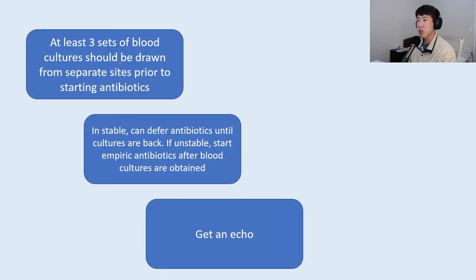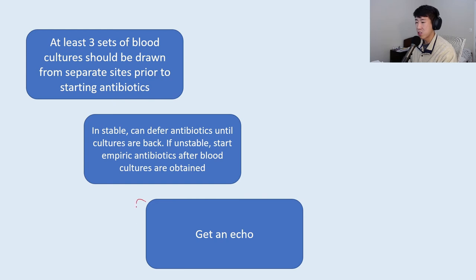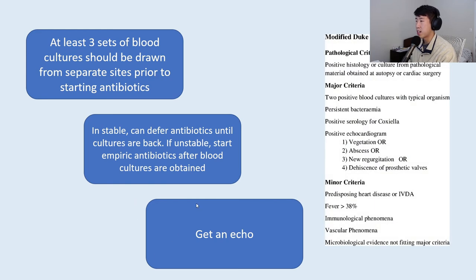For treatment, according to UpToDate, at least three sets of blood cultures should be drawn from separate sites prior to starting antibiotics. In stable patients, you can defer antibiotics until cultures are back; if unstable, start empiric antibiotics after blood cultures are obtained. In practice, most people start antibiotics right after blood cultures are drawn. You should also always get an echo right away to calculate your Duke criteria.